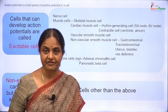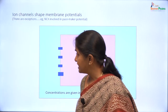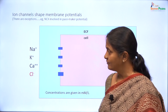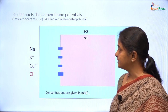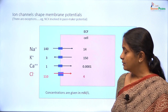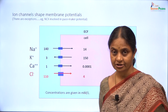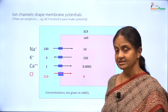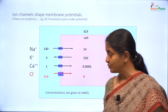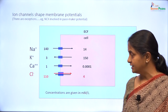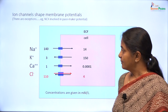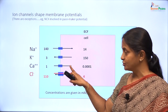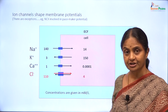Action potential is a brief period of positivity within a cell. Ion channels in general are considered to shape the membrane potential, and we have seen that there are four primary ion channels. The direction of ion transport through those channels is along their concentration gradients. The direction of current for cations is in the same direction as ion transport, whereas for anions it is in the opposite direction. From this it is obvious that sodium and calcium equilibrium potentials will be positive and potassium and chloride equilibrium potentials will be negative.